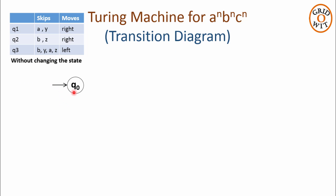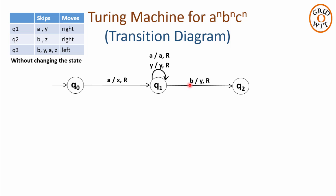Now let us see the transition diagram for this Turing machine. Initially we are on state q0. q0 on reading a will replace it with x, takes a right move, and changes its state to q1. q1 will skip a's and y's in between, moving towards the right without changing its state — there is a self loop. You can check from the table that q1 skips all a's and y's. As soon as q1 reads the symbol b, it will replace it with y, takes a right move, and changes its state to q2. q2 will skip b's and all z's in between moving towards the right without changing state.